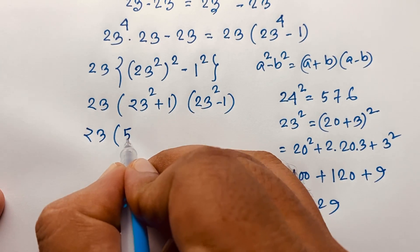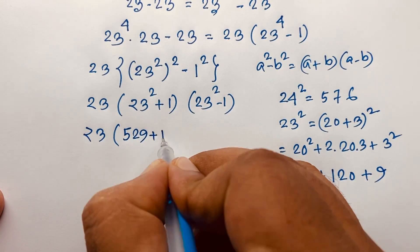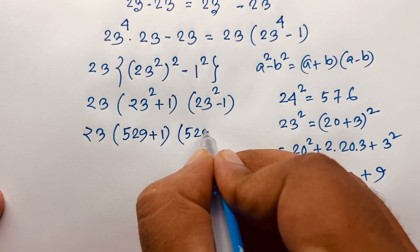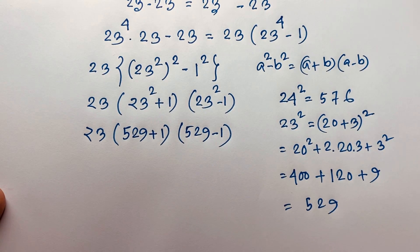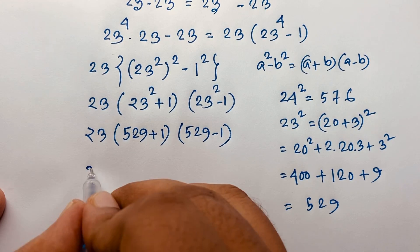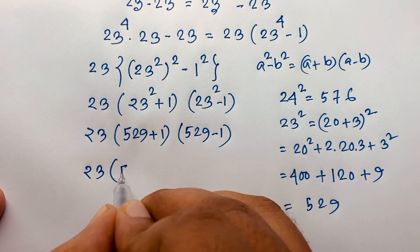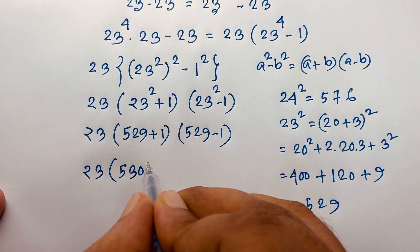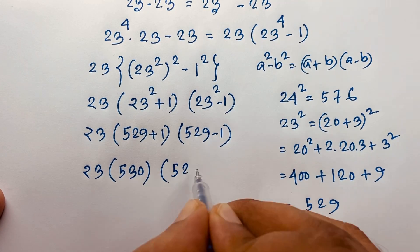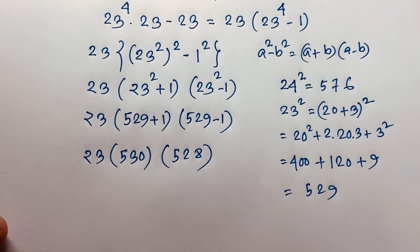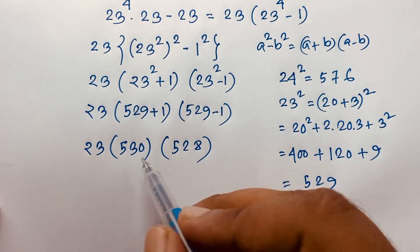So substituting back, we have 23 times (529 plus 1)(529 minus 1), which is 23 times 530 times 528.